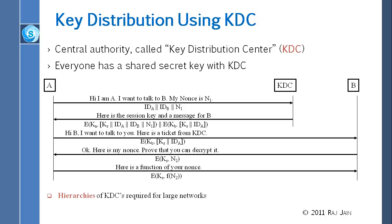A sends the KB-encrypted ticket to B saying, 'I want to talk to you, here is the ticket from KDC.' B can decrypt it because it knows KB, and from it finds the session key KS and the ID of A. Then B replies with its nonce N2 encrypted with the session key: E(KS, N2), saying 'prove you can decrypt it.' Since A knows KS from the KDC response, it can respond with the function of that nonce using KS. That is how KDC works.